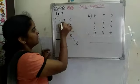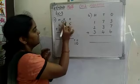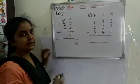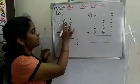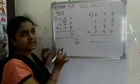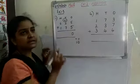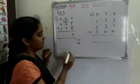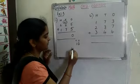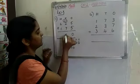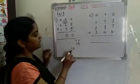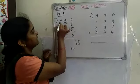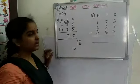And this 1 will be carry over to the tens place. Now here we are having 2 and 7 and 1. So 2 plus 7 is 9, and 9 plus 1 is again 10. So we will write 0 in the tens place and 1 will be the carry over to the next place.